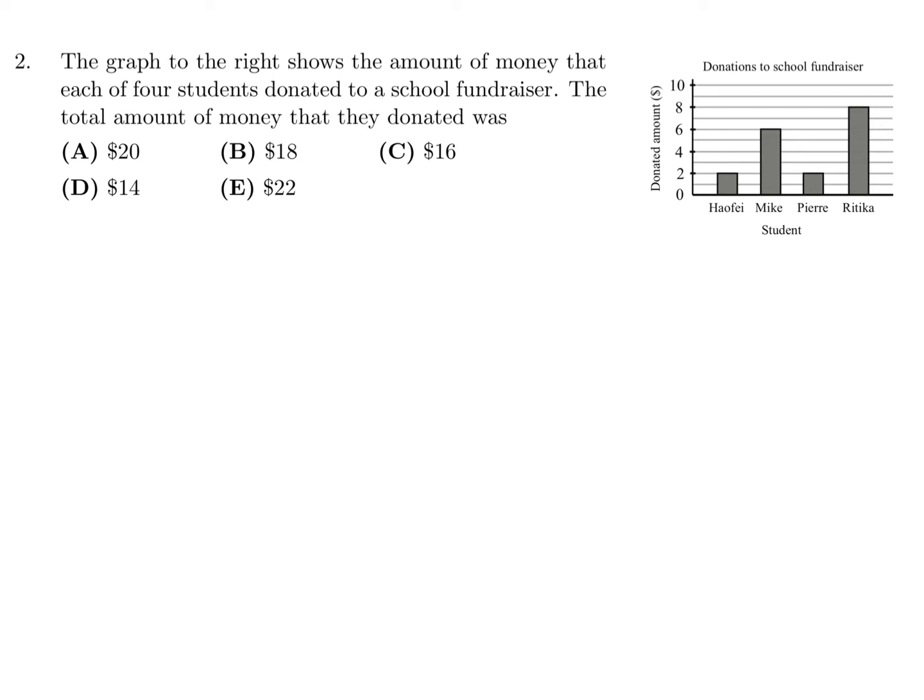The graph to the right shows the amount of money that each of the four students donated to the school fundraiser. The total amount of money they donated was... Well, this person donated $2, Mike donated $6, Pierre donated $2, and Rutika donated $8. So you just add it up to get the total, and that total to me is 18, and therefore that's B.